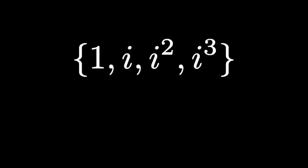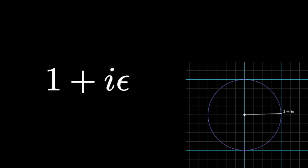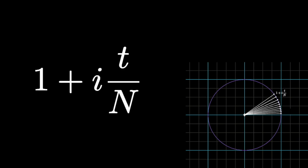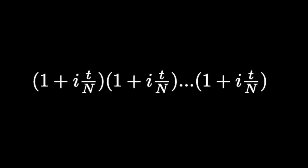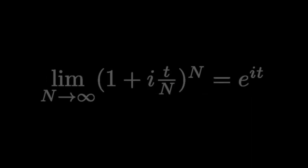Whereas the powers of i generate the finite group of rotations around the origin by 90 degrees, when we take the exponential of i times a real number, it generates an infinite group of rotations for any angle at all. The expression for an infinitesimally small rotation around the origin is 1 plus i times epsilon, where epsilon is a small real number. Imagine dividing a finite rotation by an angle t into an infinite number of infinitesimally small rotations given by 1 plus i times t over n. Taking the limit as n goes to infinity, we recover the complex exponential function.